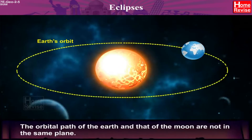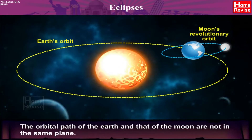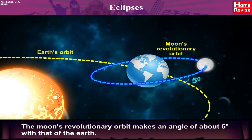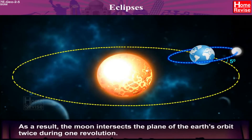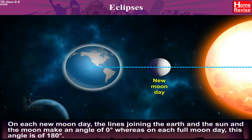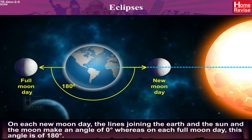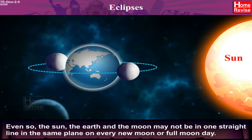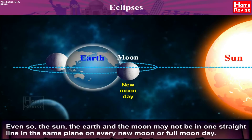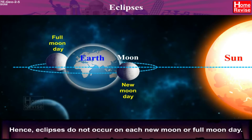Eclipses. The orbital path of the Earth and that of the Moon are not in the same plane. The Moon's revolutionary orbit makes an angle of about 5 degrees with that of the Earth. As a result, the Moon intersects the plane of the Earth's orbit twice during one revolution. On each New Moon day, the lines joining the Earth, the Sun and the Moon make an angle of 0 degrees, whereas on each Full Moon day, this angle is 180 degrees. Even so, the Sun, the Earth and the Moon may not be in one straight line in the same plane on every New Moon or Full Moon day. Hence, eclipses do not occur on each New Moon or Full Moon day.